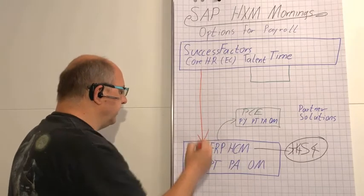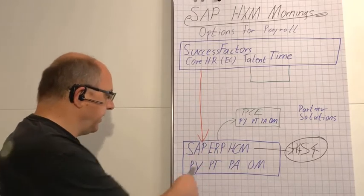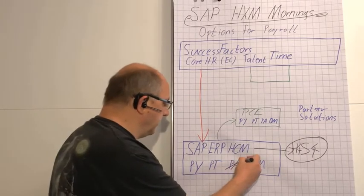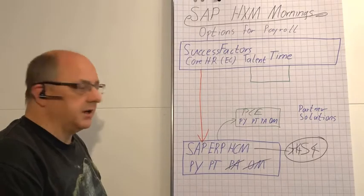So Employee Central is the leading system of record. It feeds the payroll, it could feed the time and attendance solution, but we then won't have the organizational management and personnel administration in this system.